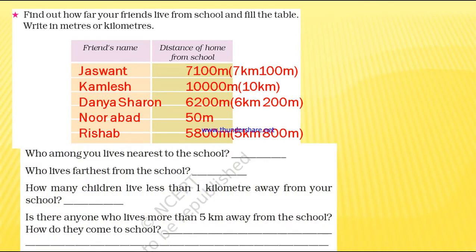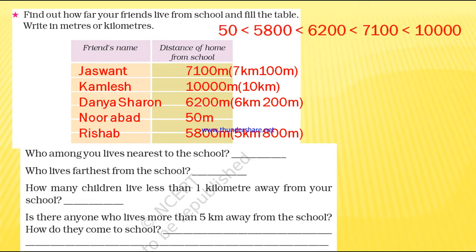Now let's see the questions from the above table. Who among you lives nearest to the school? First of all, we are going to compare the given values. We compare all five children's distances. It is arranged smallest to greatest — increasing order, ascending order. Can you remember children? So here it is arranged in increasing order, ascending order.